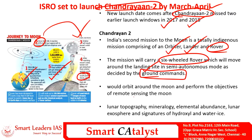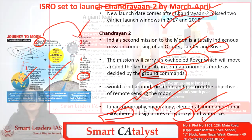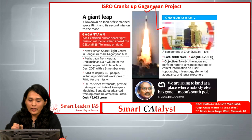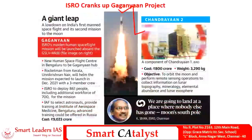This mission will carry a six-wheeled rover which will move around the landing site in a semi-autonomous mode as decided by the ground commands of ISRO. It would orbit around the Moon and perform various remote sensing operations on the surface, including lunar topography, study of minerals, elemental abundance, lunar exosphere signatures, and compounds such as hydroxyl and water ice on the Moon.